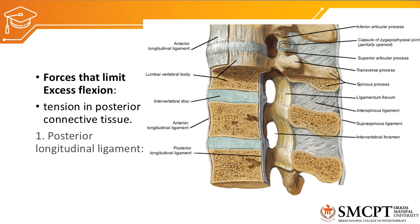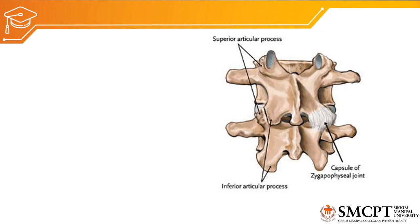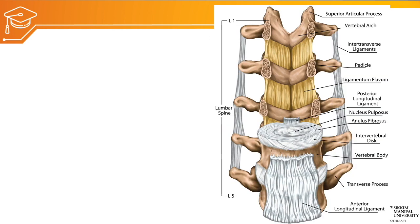Here you can see the posterior longitudinal ligament just posterior to the vertebral bodies. The next ligament that prevents flexion is the capsular ligament, which covers the apophyseal joint — it prevents rotation, side flexion, as well as flexion of the vertebral spine. The next structure which prevents flexion is the well-developed ligamentum flavum, which lies between the lamina of the superior and inferior vertebra, preventing flexion as well as side flexion.